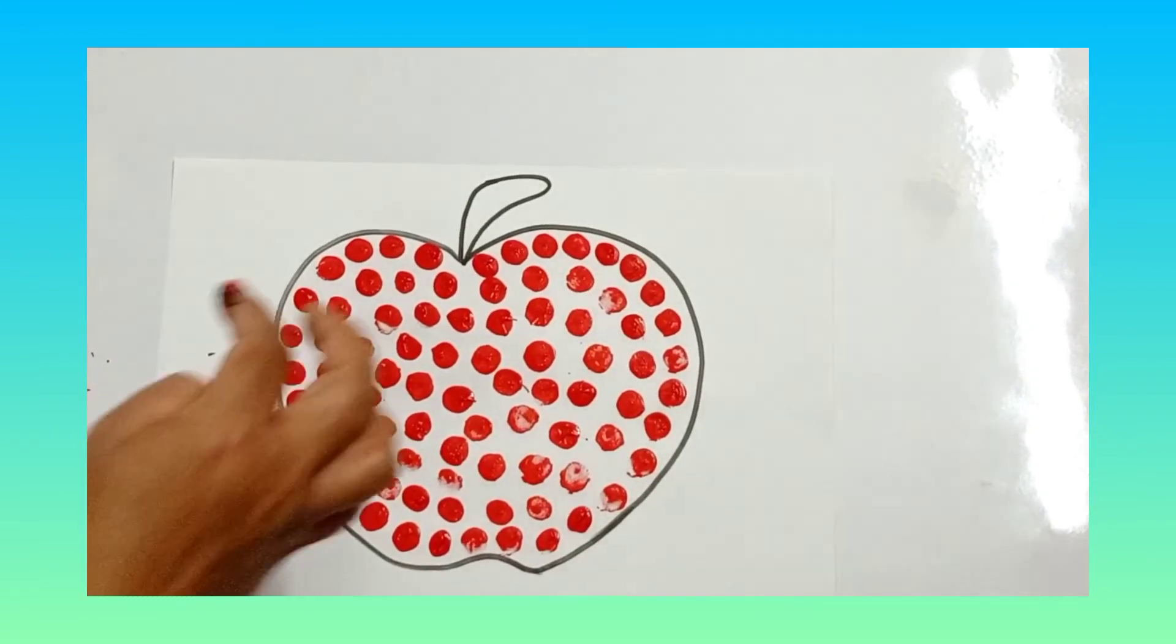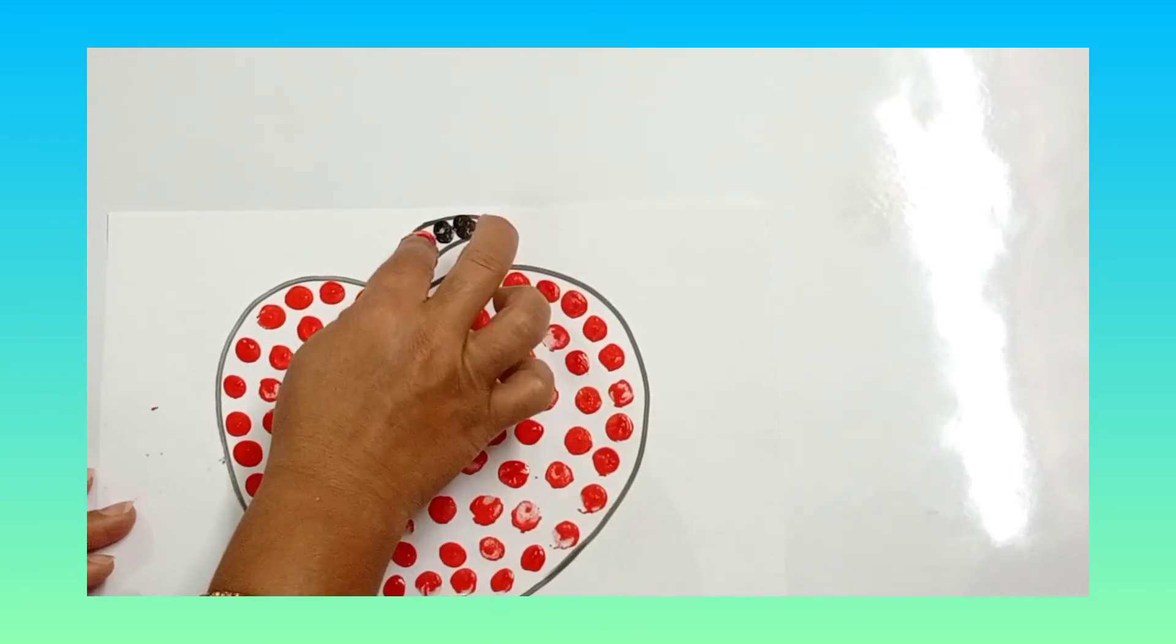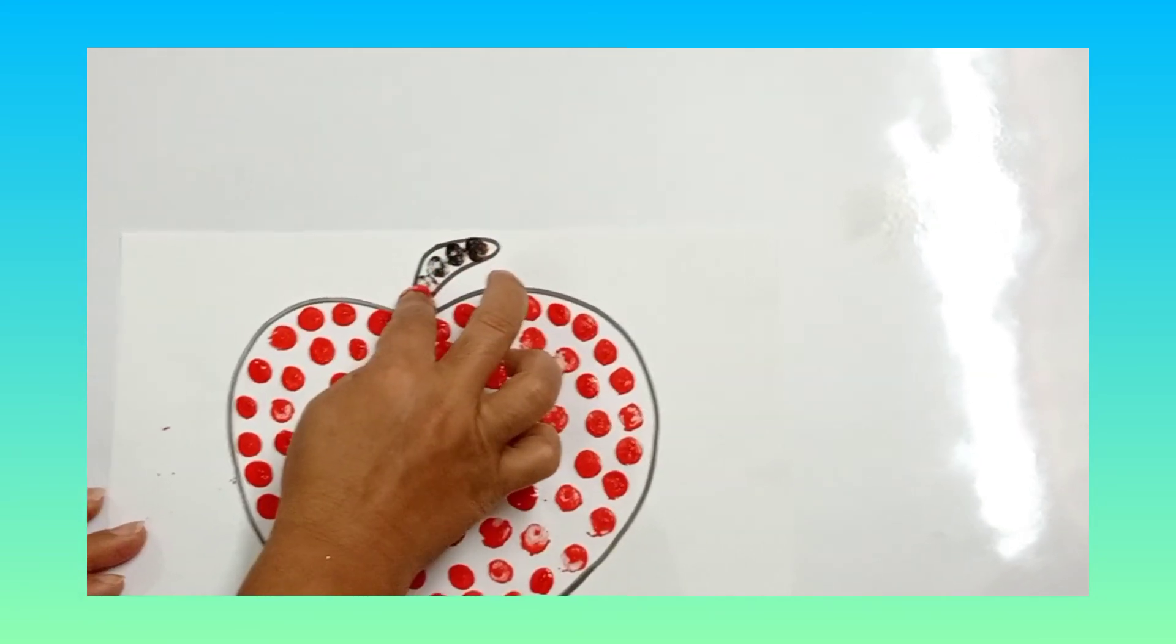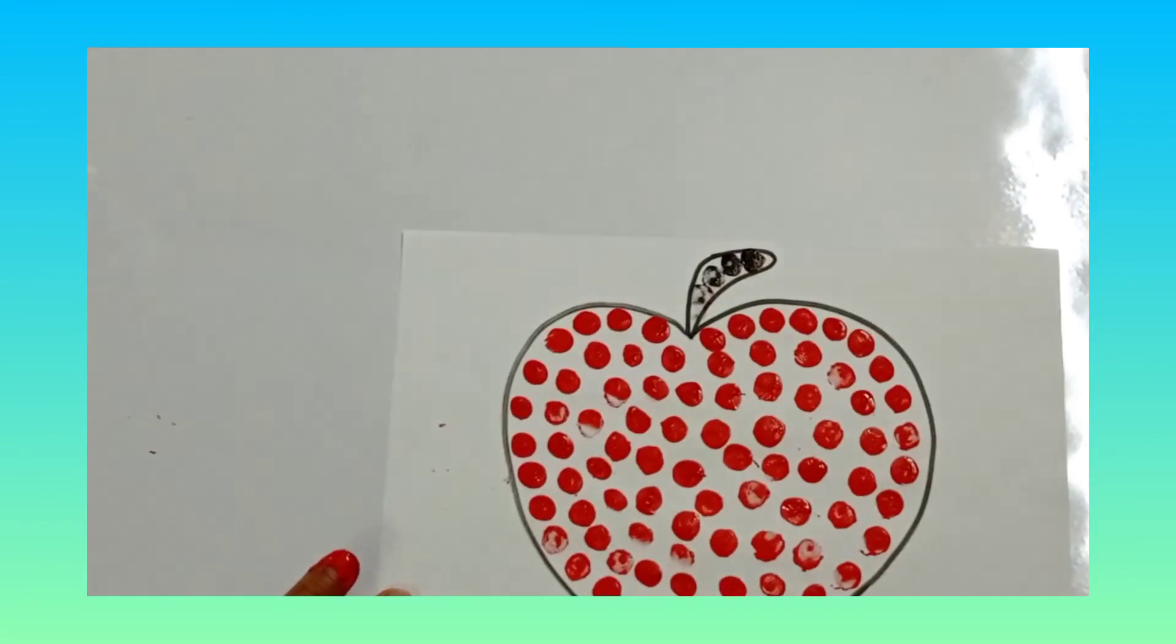We will take brown color, a little bit of brown color. And what are we going to do? Hum log ish ko jo stalk hota hai ish me bhi hum kya karayenge. Finger printing karayenge ish tarah se. Here your apple is ready.